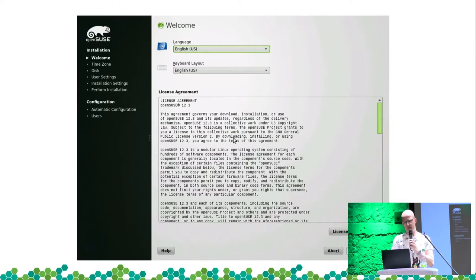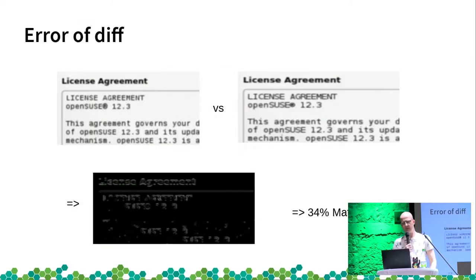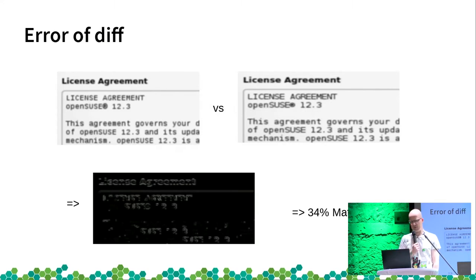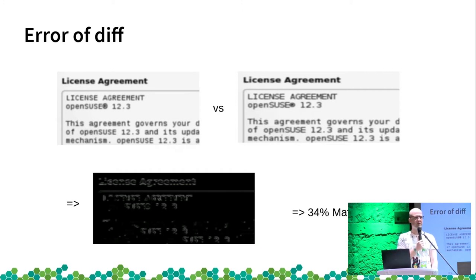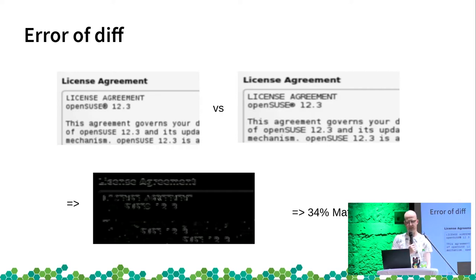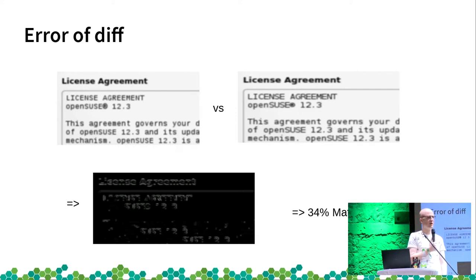Here we have the same exercise again — on the left side before, right side after. The pixel differences at the bottom contain quite some noise. This is a 34% match. This is how it looks like on OpenQA internally.